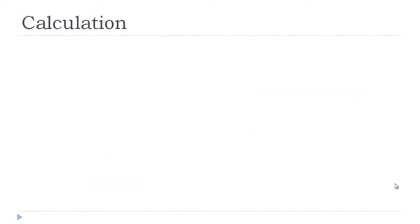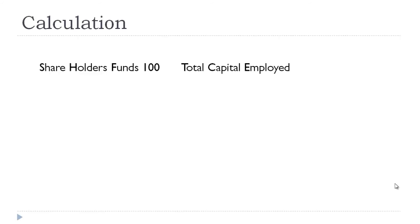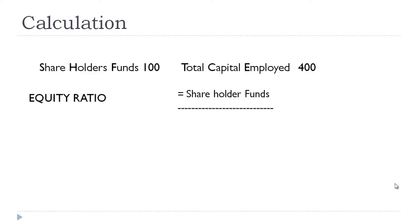Now we will see the calculation part. In our case, the shareholder funds was 100 and the total capital employed was 400. So calculating equity ratio is nothing but expressing shareholder funds as a percentage of total capital employed — that is, shareholder funds divided by total capital employed. We have it as 100 by 400, which gives us an equity ratio of 25 percent. So equity ratio basically conveys the proportion of shareholder funds to the total capital employed.